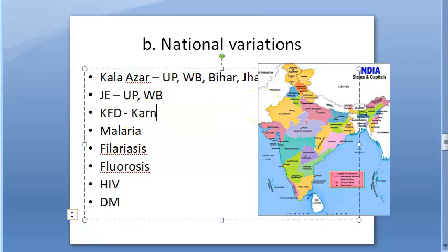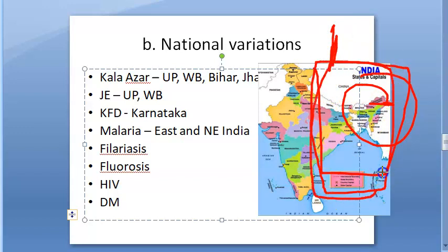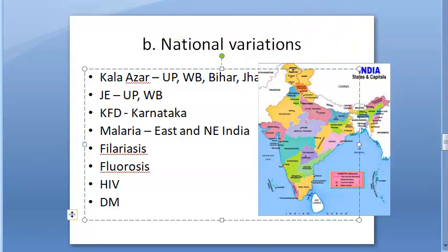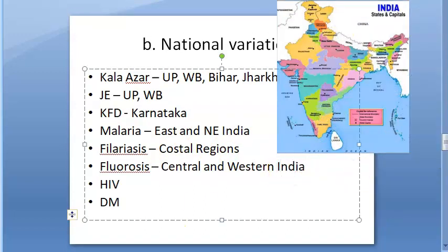Kyasanur Forest Disease (KFD) is found specifically in Karnataka, particularly in Shumuga area, due to the hard tick vector found there. Malaria is more prevalent in east and northeast India where the Anopheles mosquito is more common. Filariasis is found more in coastal regions, as it requires water and coastal environments.